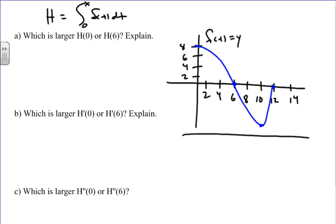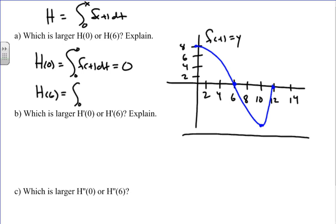Question (a) asks which is larger: h(0) or h(6). For h(0), we have the integral from 0 to 0 of f(t) dt, which equals 0. For h(6), we have the integral from 0 to 6 of f(t) dt. Looking at the graph, this value is positive from 0 to 6, so we're finding all positive area under the curve.